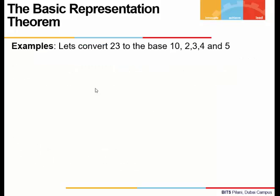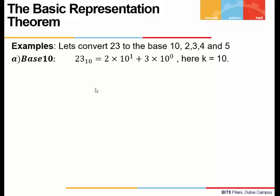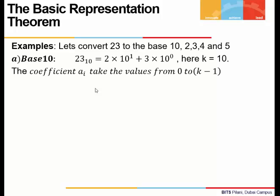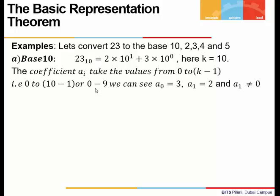Let's see an example. What if we want to convert 23 to different bases? The theorem says any integer can be expressed to any base. Here we take 23 and will try to represent it in bases 10, 2, 3, 4, and 5.